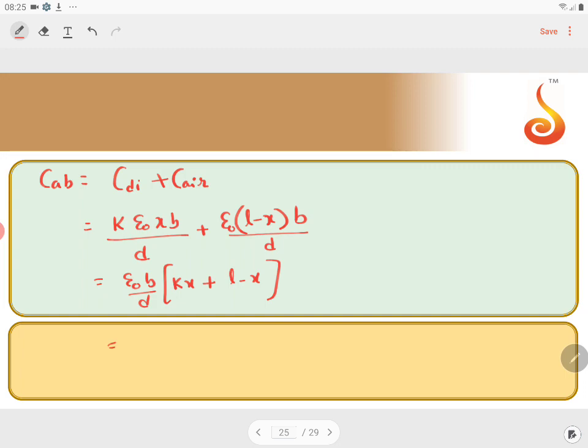Or else, you can simplify: epsilon naught B by D into (K minus 1) into X plus L. So, this is the effective capacitance.